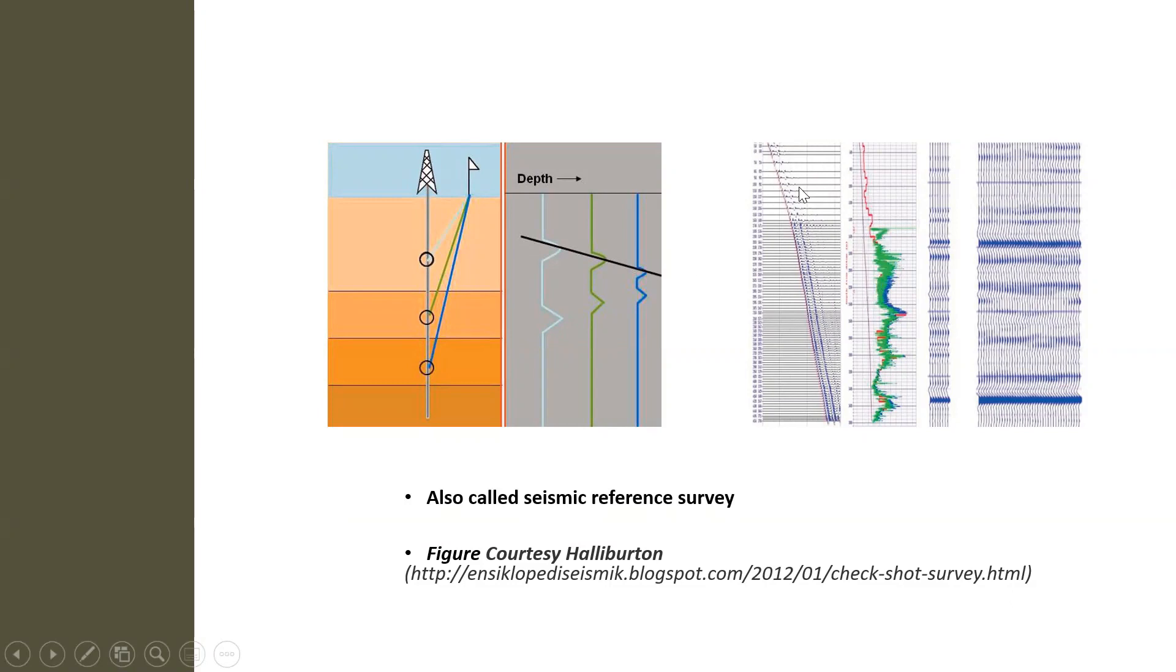In the other figures here, if I start from the left, the first figure is the travel time and depth curves overlaid with first break CheckShot. The second is sonic corrected by CheckShot in the center. And this is a synthetic seismogram that has been correlated here with the surface seismic data near the wellbore. It is also called seismic reference survey.